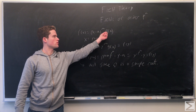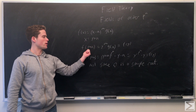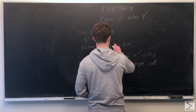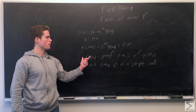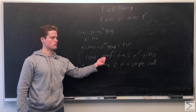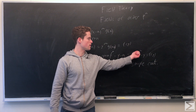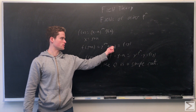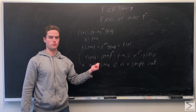Let a be some root and write f(x) = (x - a)^m times g(x). We make the substitution x = y + a, so f(y + a) = y^m times g(y + a). But plugging into our original polynomial, (y + a)^(p^n) minus (y + a) equals y^(p^n) minus y, which is f(y). So y^m times g(y + a) equals f(y). Since we already know zero is a simple root, m must equal one, and therefore all roots are unique.